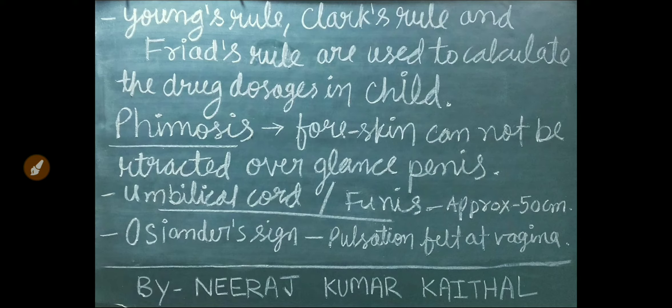Phimosis: foreskin cannot be retracted over the glans penis in phimosis condition. Umbilical cord is also known as funis. Its length is approximately 50 cm. Oceander's sign is pulsation felt at the vagina.